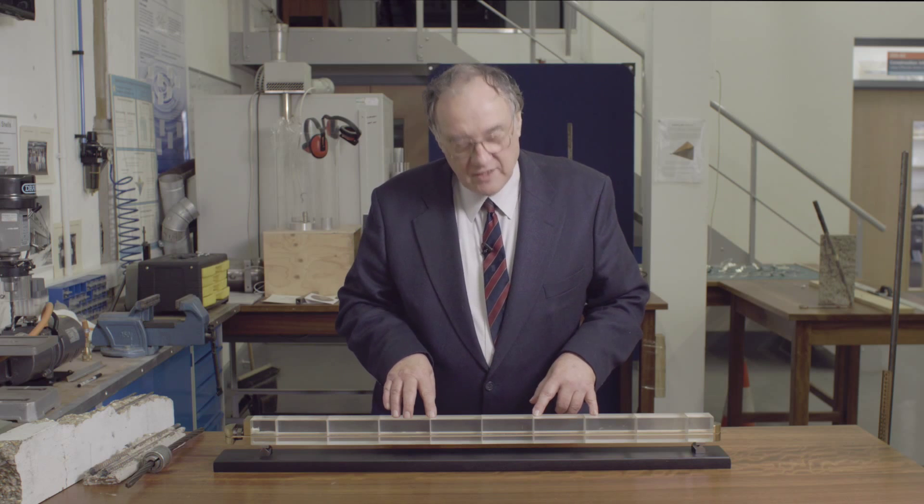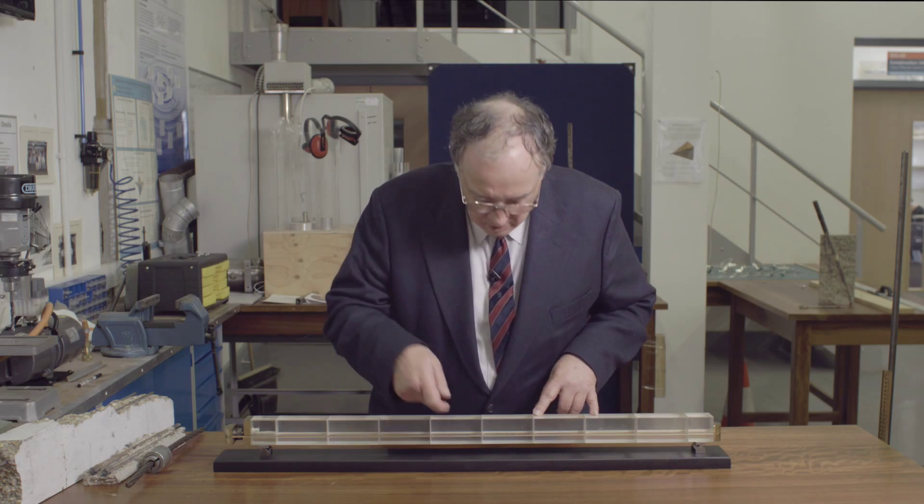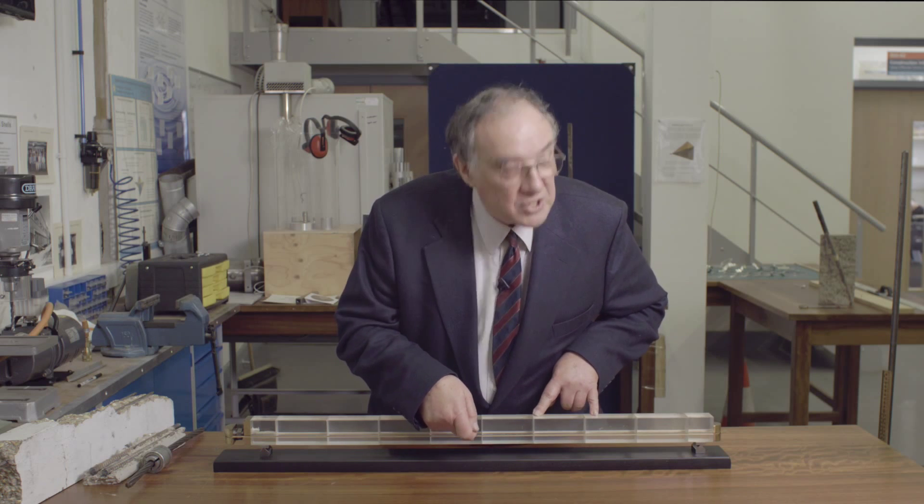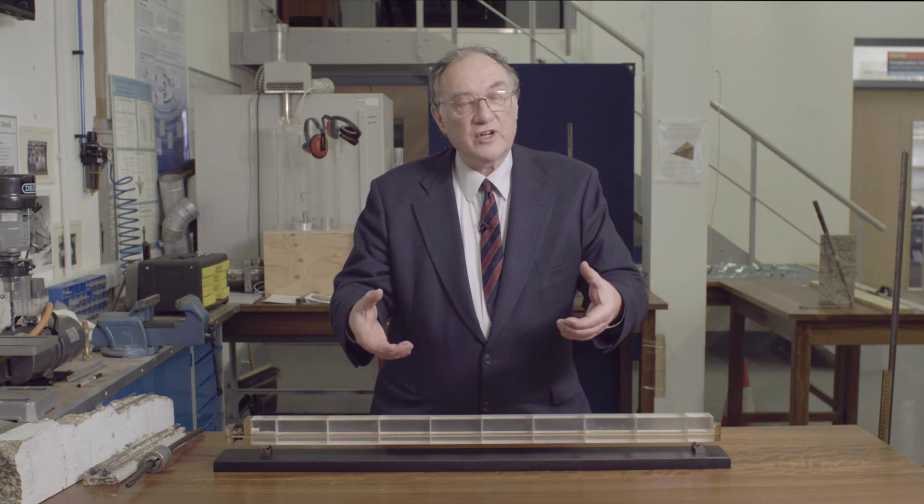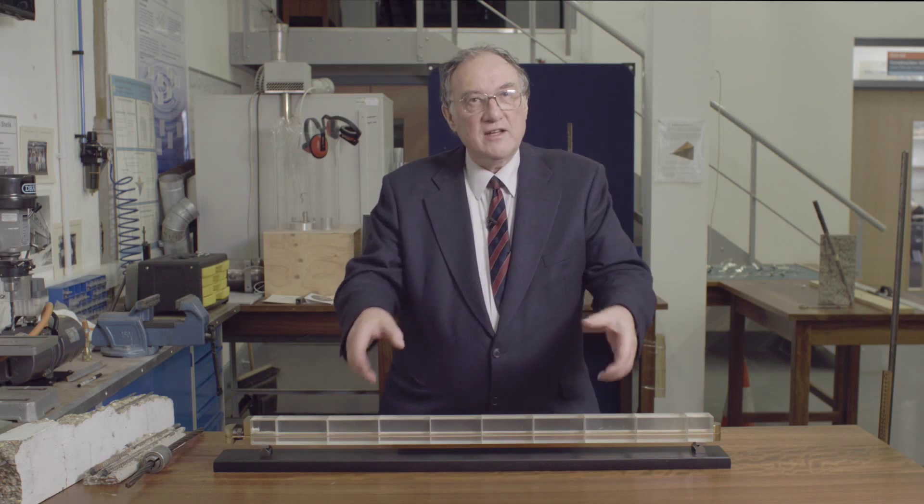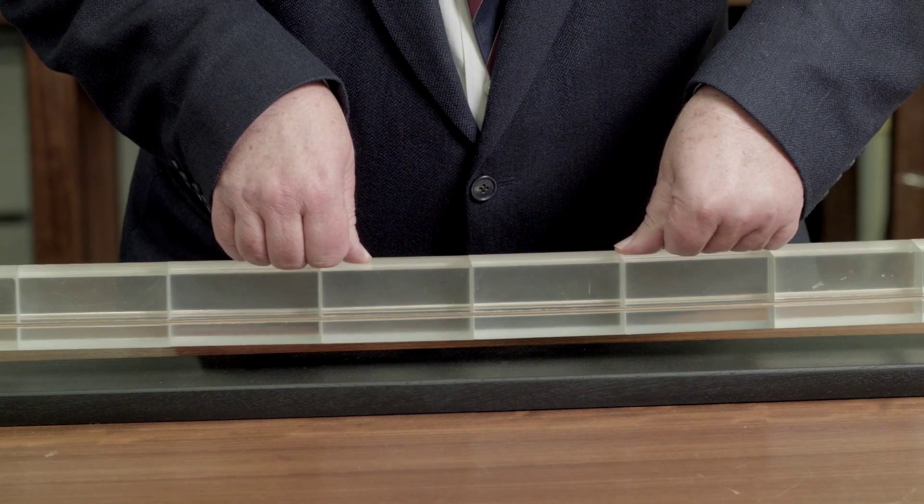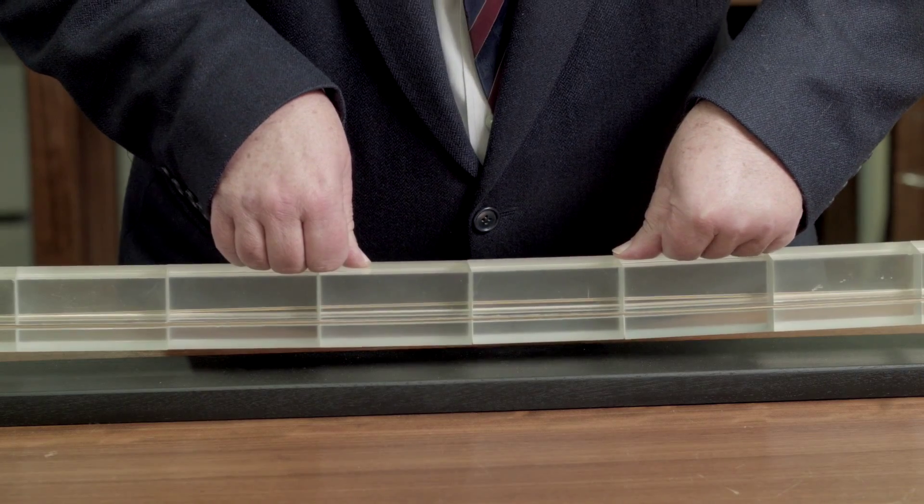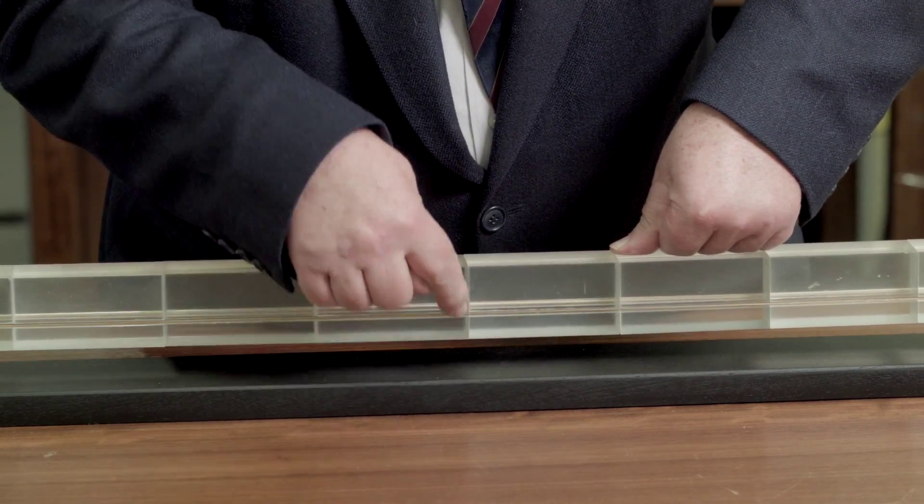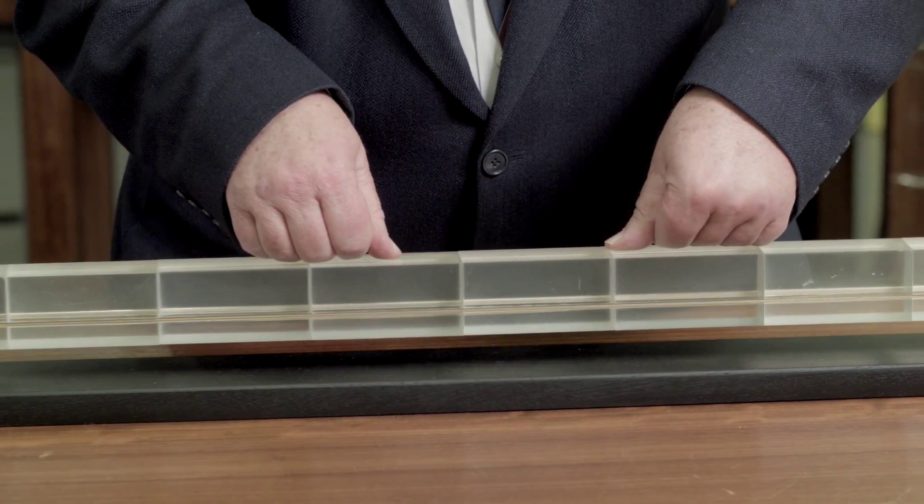We can see the effect of this on my acrylic model. With the tendon at the bottom position, it's in an ideal position for carrying sagging bending where there's tension induced in the bottom of the beam. And I can put quite a significant load onto this beam before the joints between the segments start to open up.